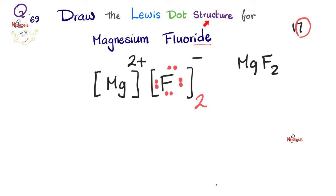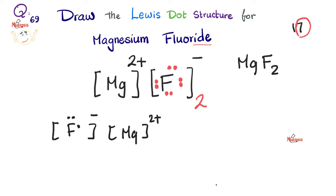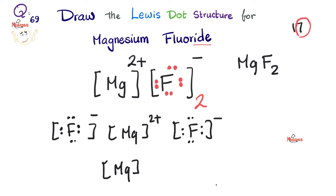There are multiple correct ways to draw the Lewis dot structure for magnesium fluoride. You can draw Mg²⁺ flanked by two F⁻ atoms each with 8 dots, or you can draw the two fluorine atoms on separate sides of magnesium. All representations are correct as long as Mg²⁺ is shown and each fluorine has 8 dots with a negative charge.